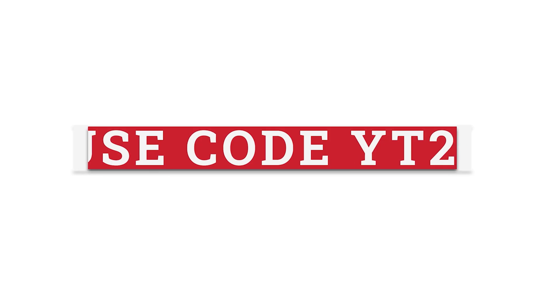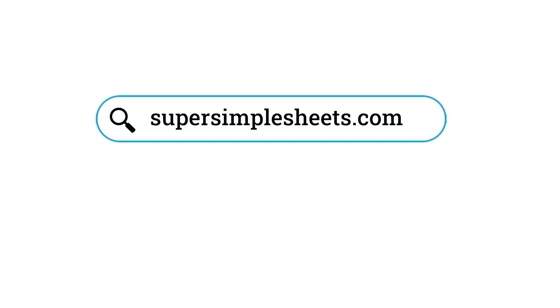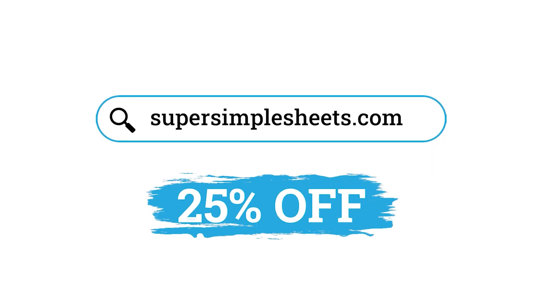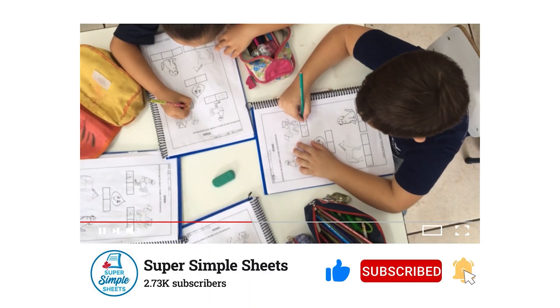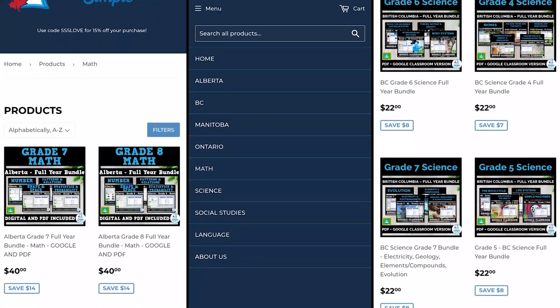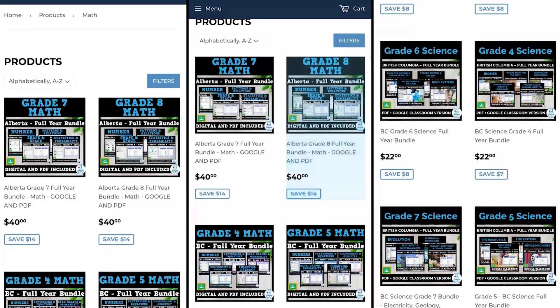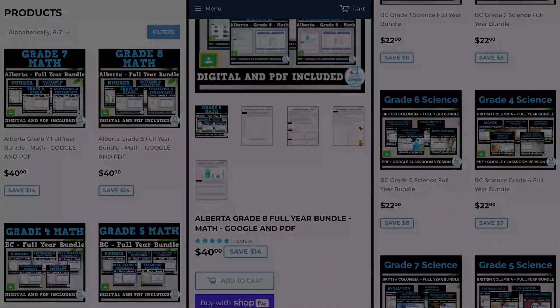See you next time. Thanks for watching. Use code YT25 at supersimplesheets.com to get 25% off, just for our YouTube viewers and only for a limited time. Browse our best-selling curriculum-aligned workbooks packed with hands-on activities and ready-to-go worksheets.